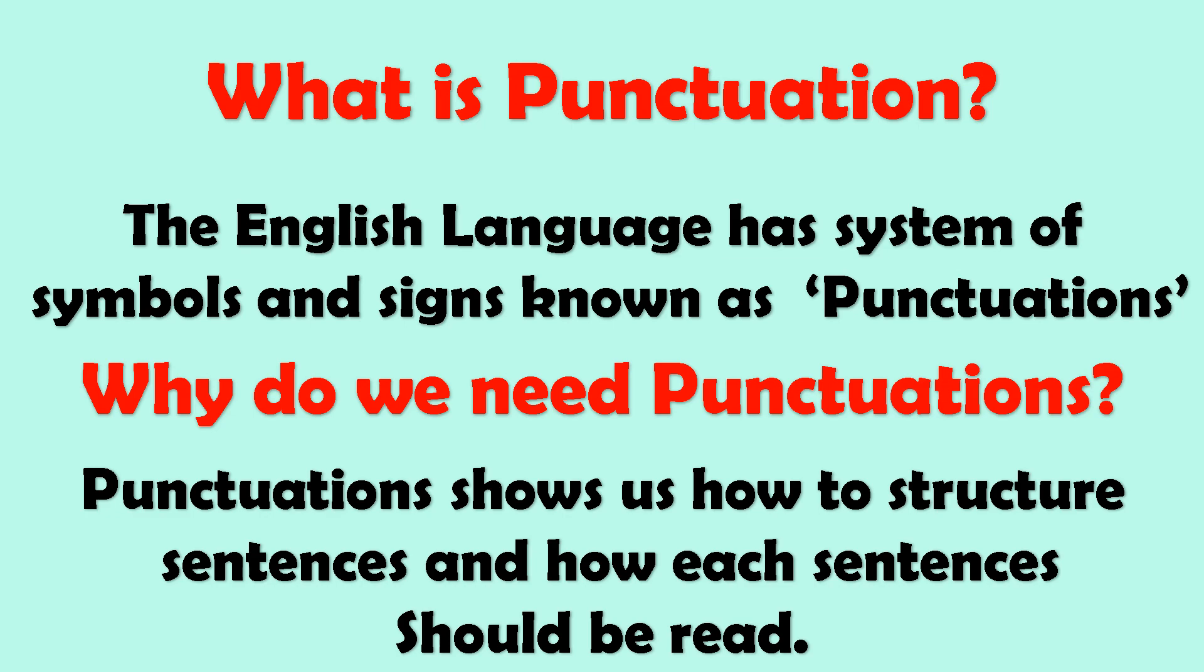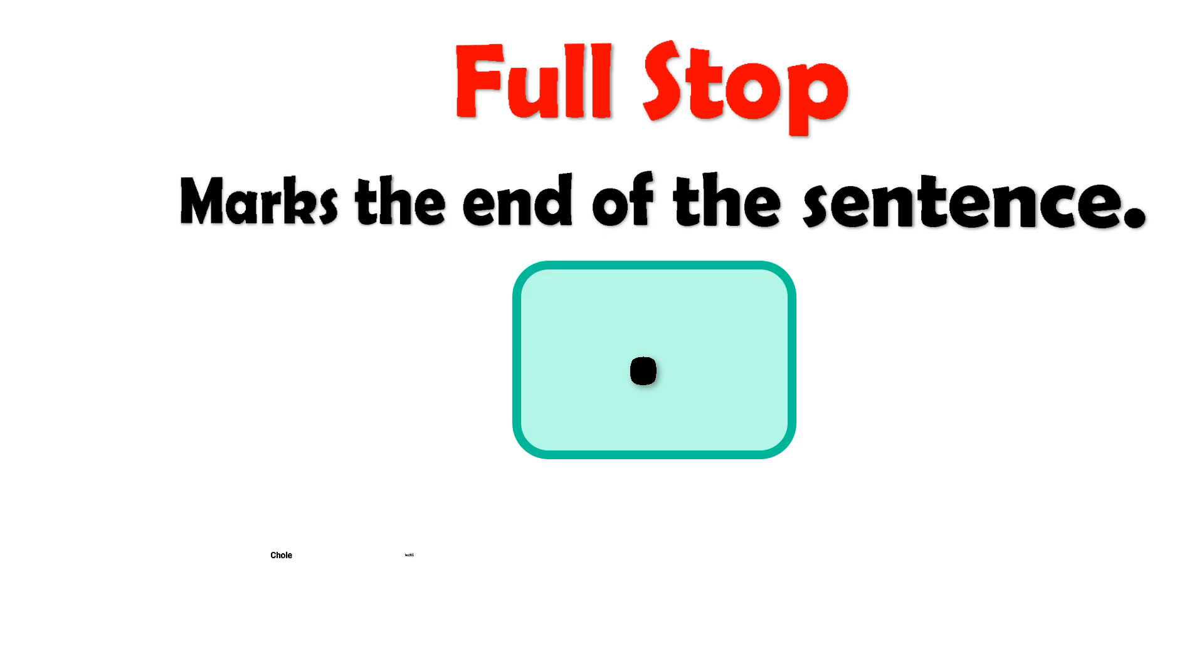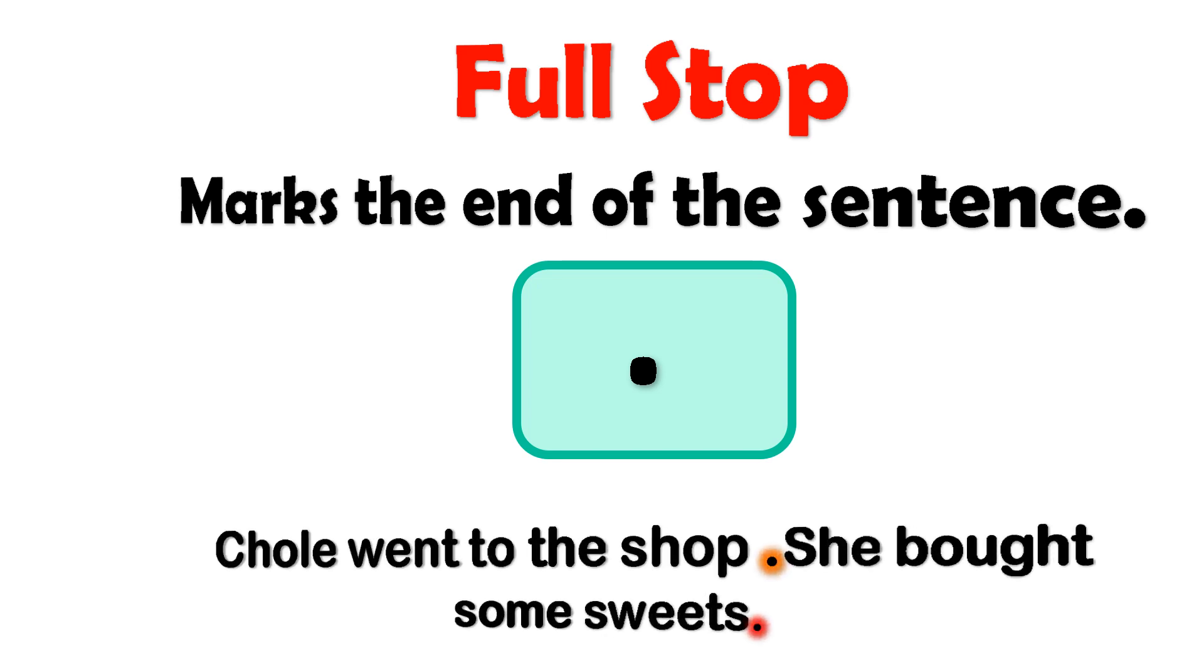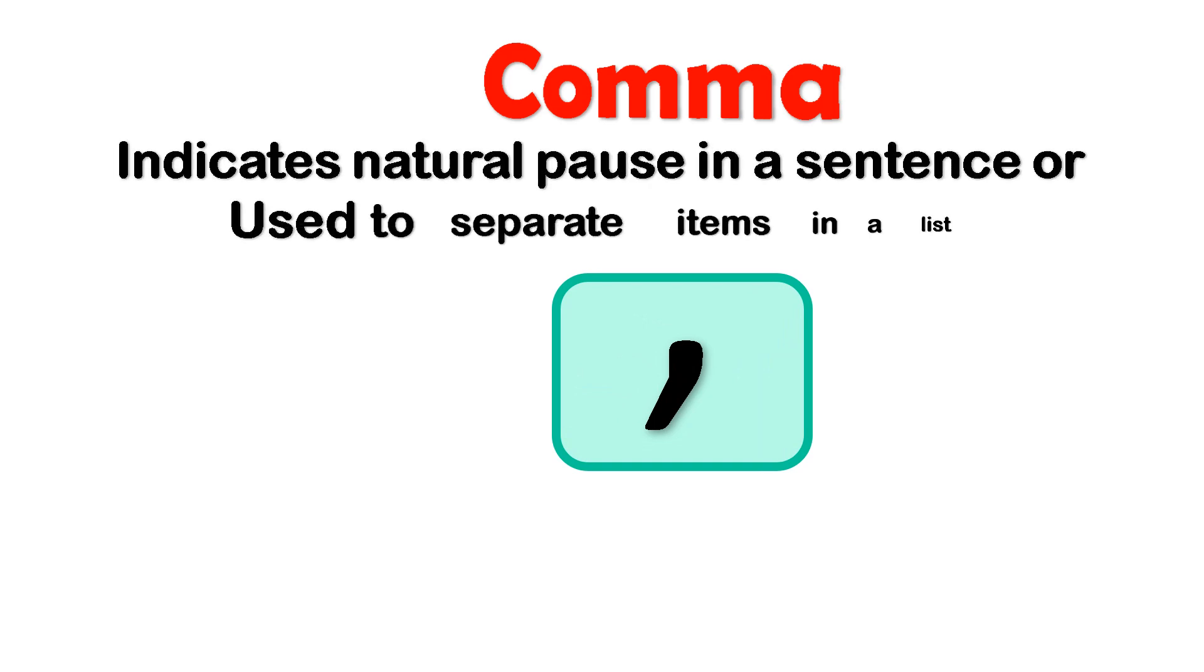Full stop. A full stop marks the end of a sentence. For example, Chloe went to the shop. She bought some sweets. Comma. A comma indicates a natural pause in a sentence or is used to separate items in a list.